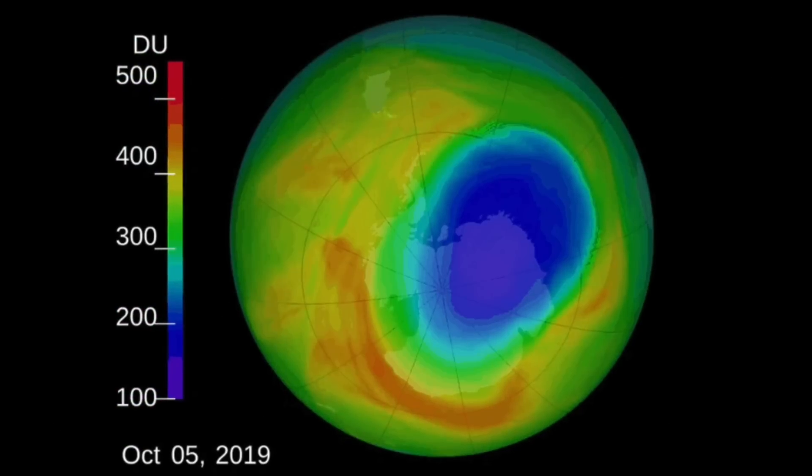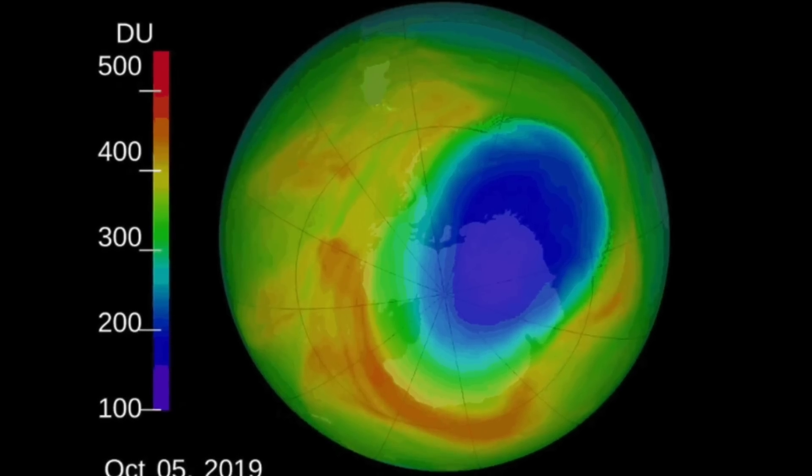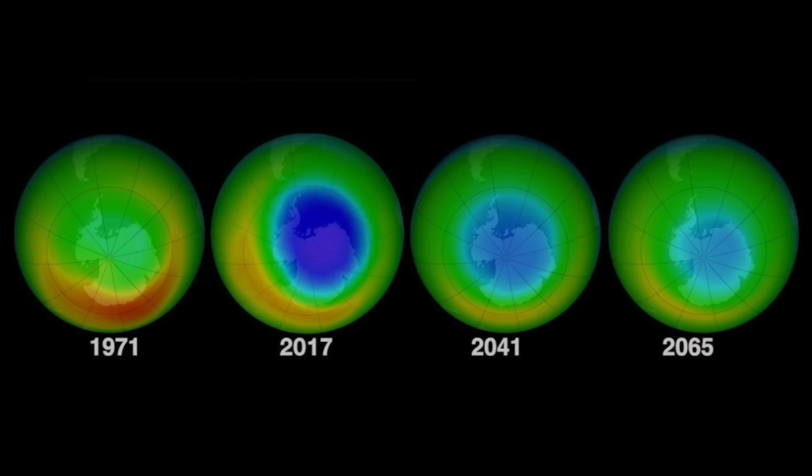The annual ozone hole reached its peak extent of 6.3 million square miles on September 8th, 2019, and then shrank to less than 3.9 million square miles for the remainder of September and October.